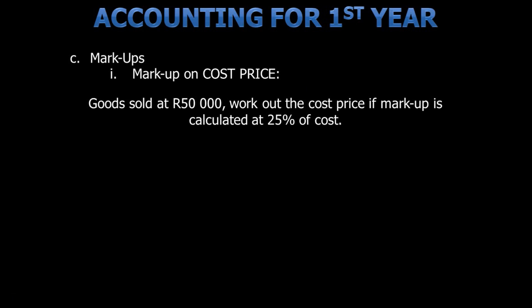Firstly, markup on cost price. Let's have a look at an example. Goods are sold at 50,000 Rand. Work out the cost price if markup is calculated at 25% of cost. There is a simple formula that we can use to derive the answer.